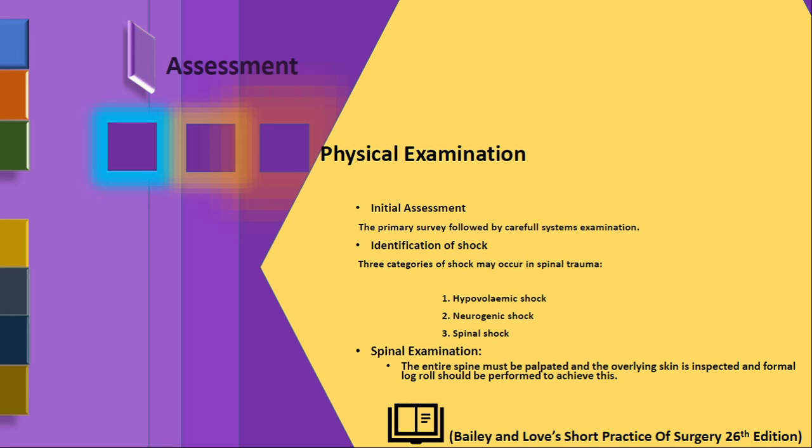Physical examination begins with identification of shock — the patient may be in hypovolemic shock, neurogenic shock, or spinal shock. The entire spine must be palpated and the overlying skin inspected for cuts or abnormalities. To examine the posterior spine, a log roll must be performed. You can roll the patient up to 20 degrees initially; if that is insufficient, roll to 90 degrees maximum. Do not roll beyond 90 degrees. The log roll must move the head, shoulder girdle, and pelvic girdle simultaneously, requiring a minimum of three people.